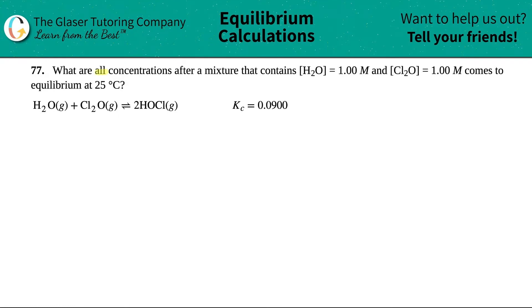Number 77: What are all concentrations after a mixture that contains H2O at 1.00 molarity and Cl2O at 1.00 molarity comes to equilibrium at 25 degrees Celsius? They give me this equation and a corresponding Kc value.